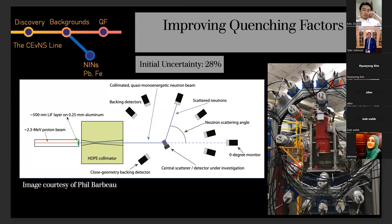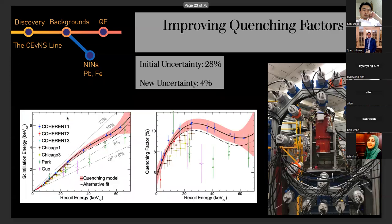You smack that monoenergetic pulse of neutrons into a central detector that you want to study, in this case cesium iodide. Then you surround that central detector with backing detectors. You can kinematically reconstruct what amount of energy went into that central detector based on the angle that neutron scattered in. With this pretty detailed campaign, which was actually before my time at TUNL, they were able to decrease this uncertainty from 28% to about 4%, which is a pretty good improvement.